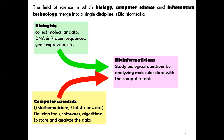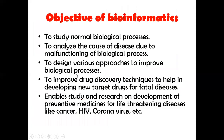Biologists collect molecular data — DNA and protein sequences, gene expressions, etc. The computer scientist, who might be a mathematician or a statistician, develops tools and software algorithms to store and analyze the data. Together they work to form the basic discipline of bioinformatics, which deals with the study of biological questions by analyzing molecular data with the help of computer tools.